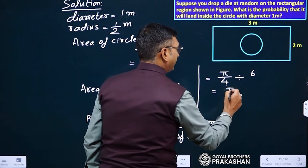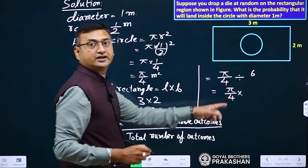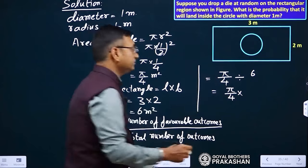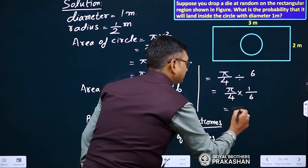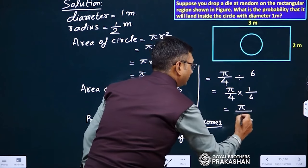That comes to be pi by 4 multiply - because we are replacing division sign with multiplication sign - 1 by 6. That is pi by 24.